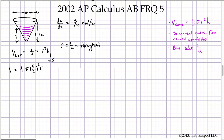Plugging in gives us 125 pi over 12, and they explicitly ask us for the units so let's be sure not to leave those out.